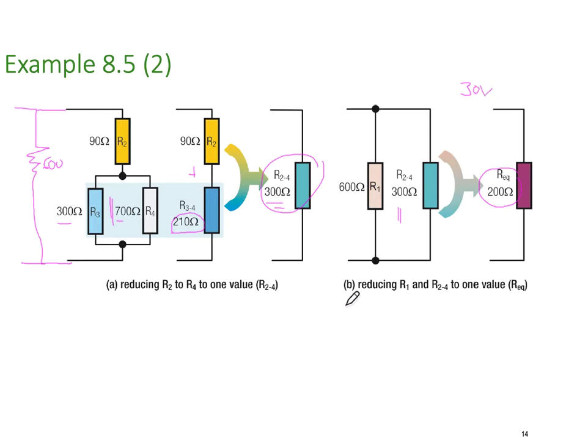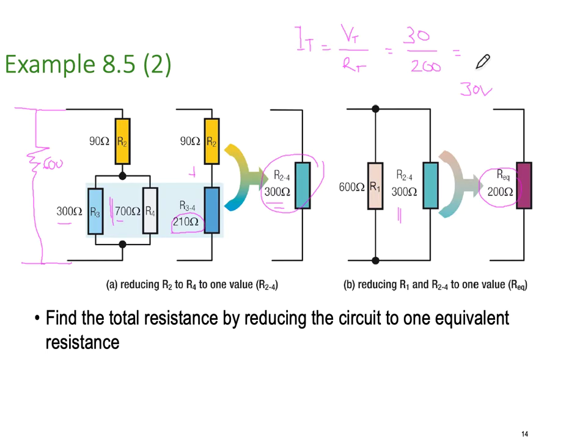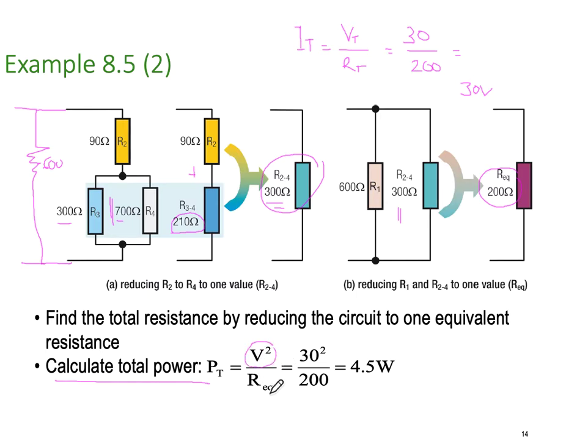Therefore, I total will equal V total divided by R total. We should have something in the order of 30 volts divided by 200 ohms and they should have done that for us. Final total resistance is equivalent circuit. And if we want to find the total power, we can go V squared divided by R or we could have found the current and gone I squared R.